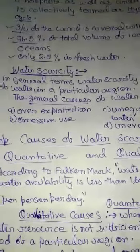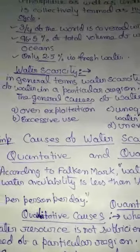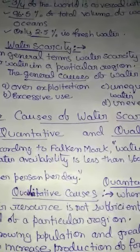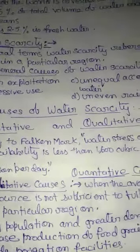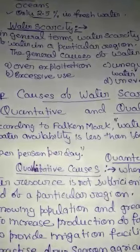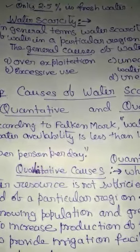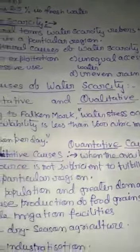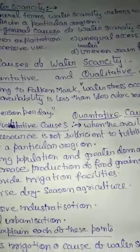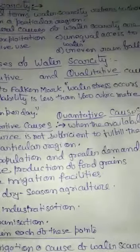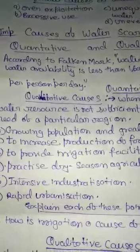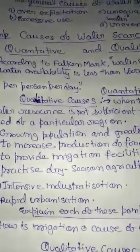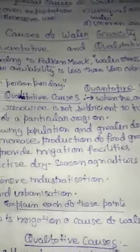Our main topic is water scarcity, or water stress, or shortage of water. Water scarcity refers to shortage of water in a particular region. The general causes of water scarcity are overexploitation of available water resources, excessive use of available water resources, unequal access to water, and uneven rainfall in a particular region. Causes of water scarcity can be grouped as quantitative water scarcity and qualitative water scarcity. According to Frank and Marks, a Swedish expert, water stress occurs when water availability is less than 1,600 cubic meters per person per day.